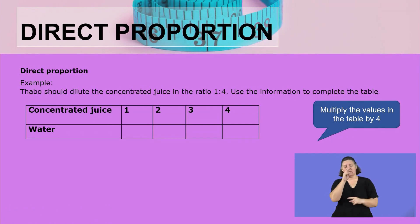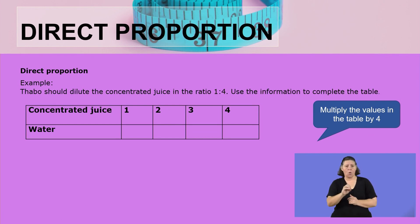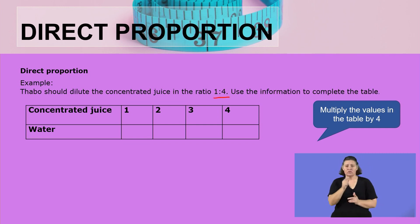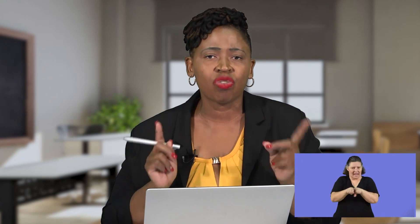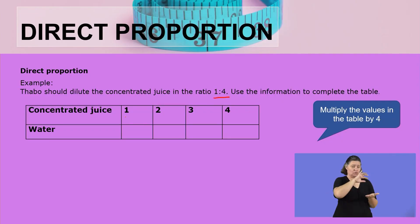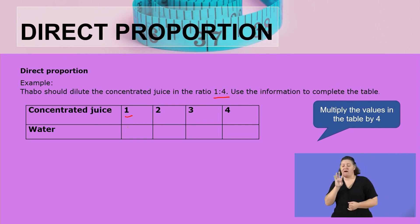Let us see the first example of working with direct proportions. Tabo should dilute the concentrated juice in the ratio 1 is to 4. Use the information to complete the table. Remember, when we say you dilute the juice in the ratio 1 is to 4, if you are using the cup to measure the juice, you must also use the cup to measure the water. The same instrument should be used to measure both. So for one glass of juice, because 1 is to 4, one glass of juice will need 4 glasses of water.